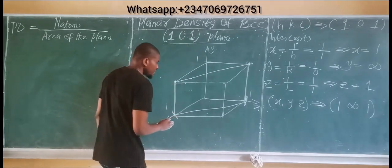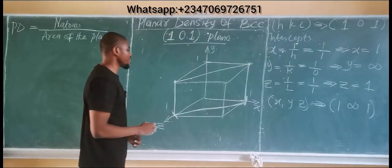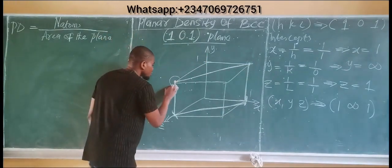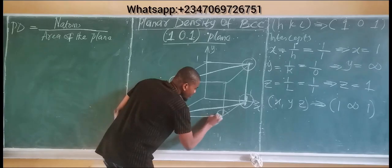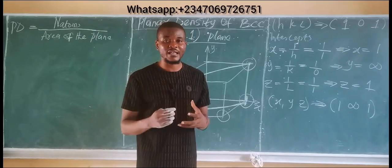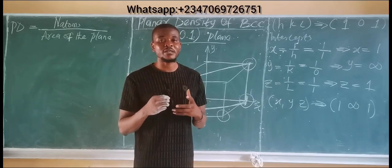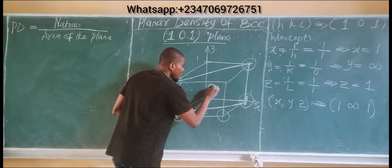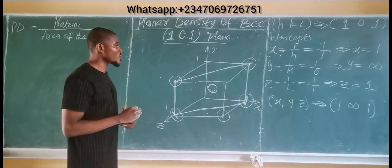This is the BCC plane 101. It looks like a rectangle. We have corner atoms at each corner of the plane. This is a BCC structure because at the body of the cube we have a central atom. The link to the atomic packing factor for BCC will be posted in the description.